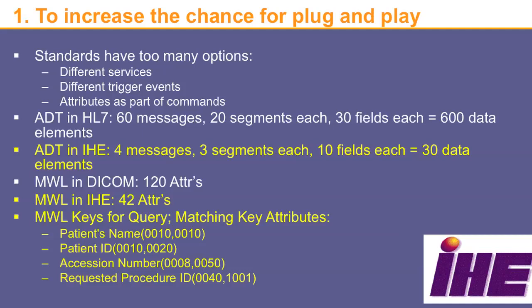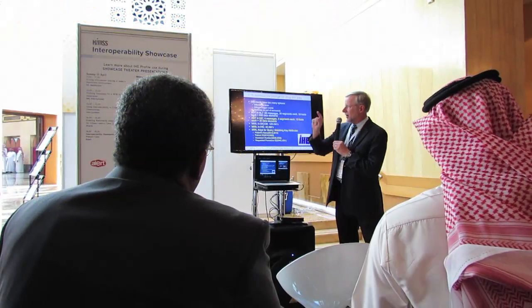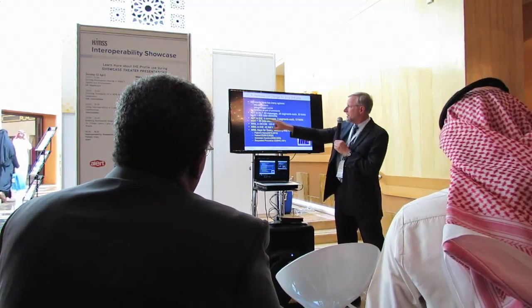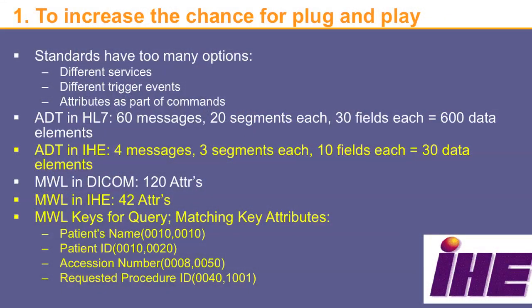The solution is to limit the optionality. In IHE, the ADT is limited to what is absolutely necessary — four messages instead of 60, with only three segments and 10 fields. So we limit the communication exchange to 30 instead of 600 data elements. Another example is DICOM modality worklist, which has at least 120 different attributes in the standard. In IHE, however, we limited that to 42 attributes and defined the matching key attributes — for example, patient name, patient ID, accession number, or requested procedure — a tremendous reduction from 120 to 42.